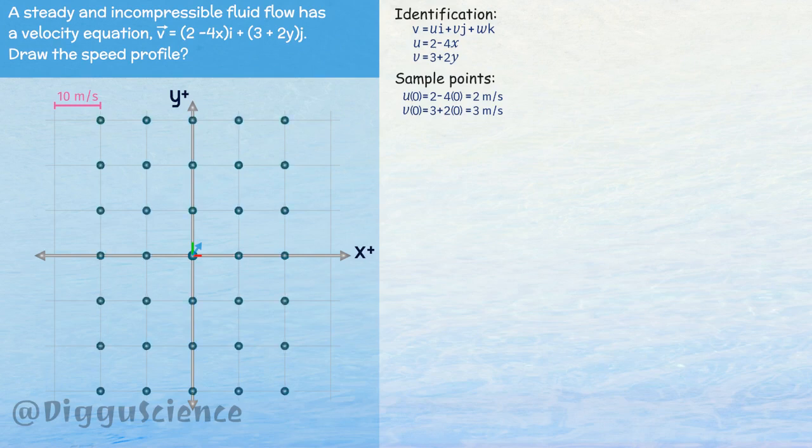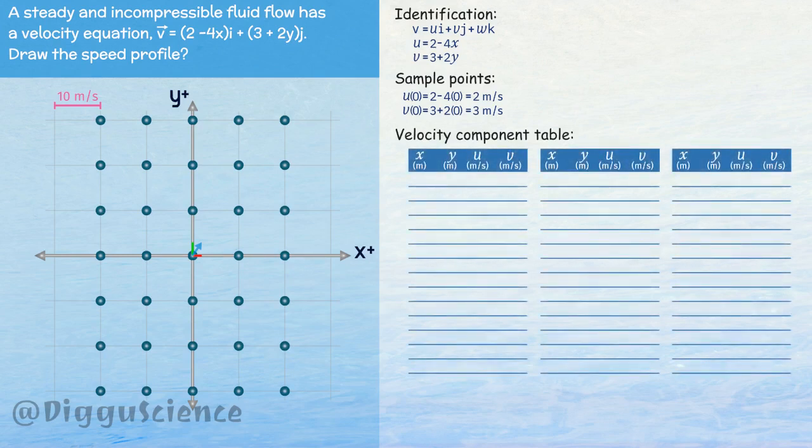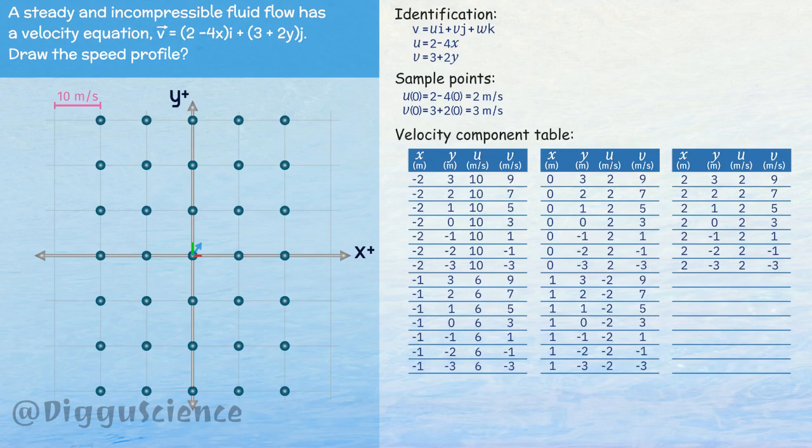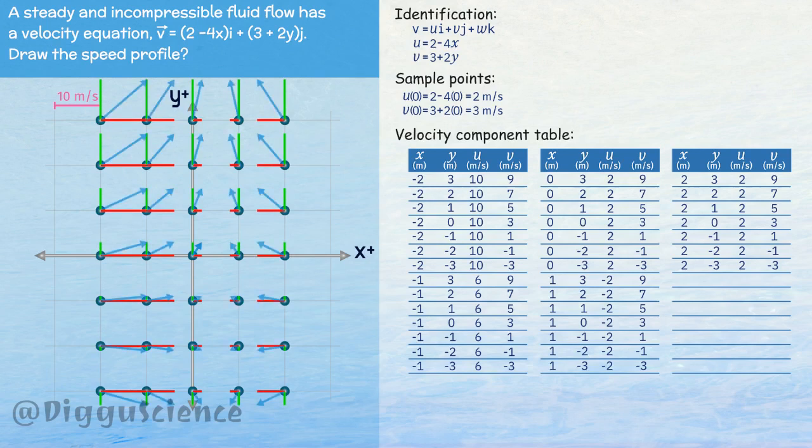Because on the coordinate plane there are several points, we can create a table consisting of an abscissa column, an ordinate column, a velocity component u and a velocity component v. Using the x and y values we will calculate the u and v values. Knowing the values of u and v at each point, we can draw the velocity vector.